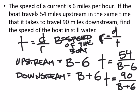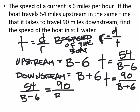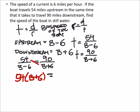Since the times were equal, I've got the upstream time, which is 54 divided by the boat minus 6, and that should equal the time downstream, which is 90 divided by the boat plus 6. So this is a proportion, meaning I can use cross multiplication.